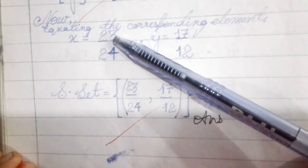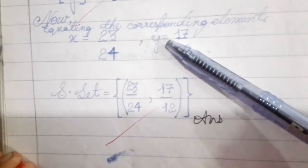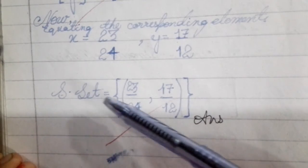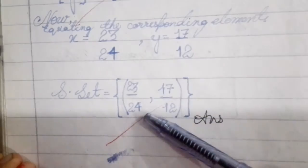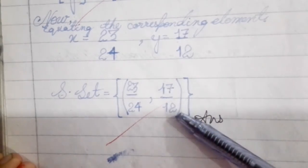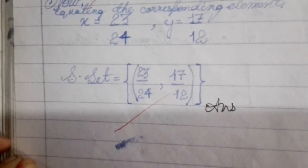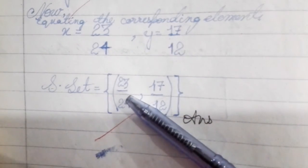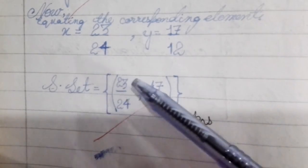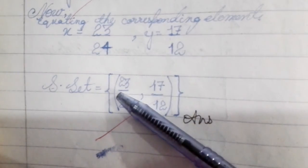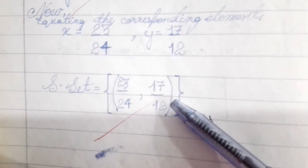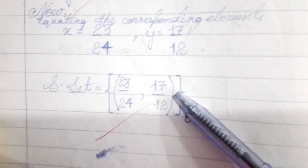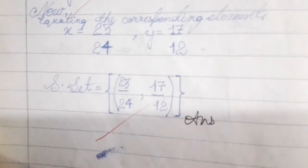X is equal to 23 upon 24 and Y is equal to 17 upon 12. This is the solution set answer. Remember, the solution set is always shown in curly brackets with round brackets, otherwise numbers will be deducted.